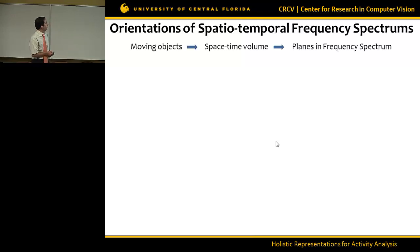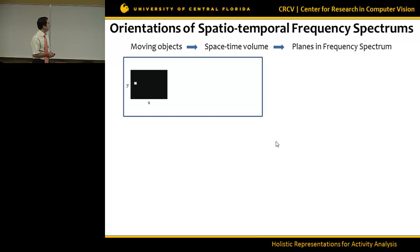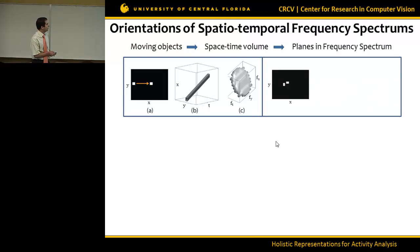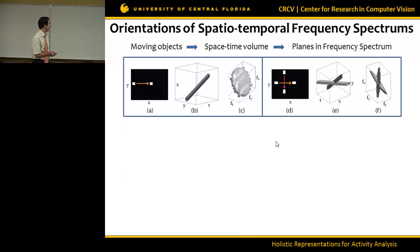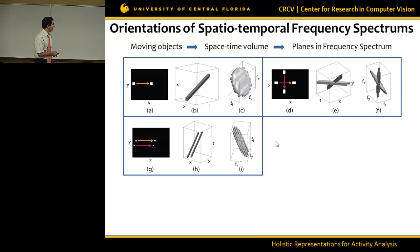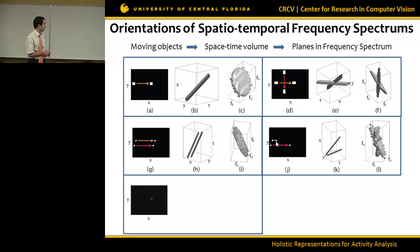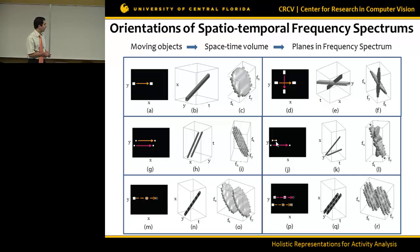Some examples illustrate this: a single translating object produces a single plane in the 3D DFT. Objects with different motions produce two planes. Two objects with the same motion produce a single plane with some gaps. Objects moving in the same direction but different speeds produce two planes. An object changing intensity produces two planes whose separation relates to the oscillation frequency. Our descriptor applies 3D filters in the frequency spectrum with different orientations and bandwidths to capture different motion components.